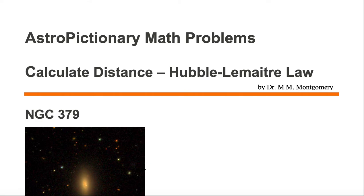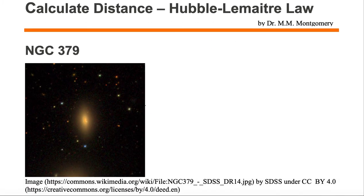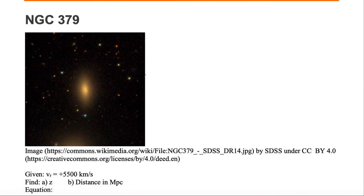We would like to calculate distance to galaxies using the Hubble-Lemaître law. We're going to take a look at NGC 379, which is the 379th object in the New Galactic Catalog.